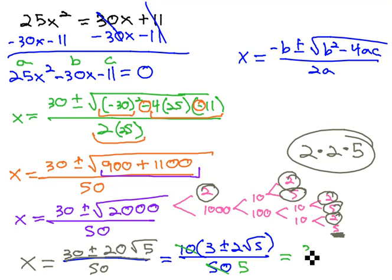This gives us our final answer of 3 plus or minus 2 root 5, all over 5, for our final solution.